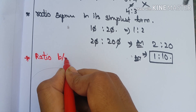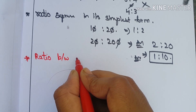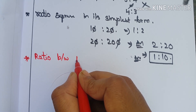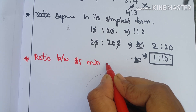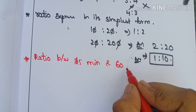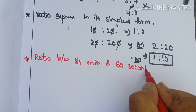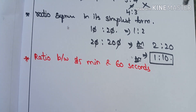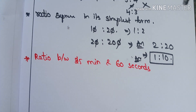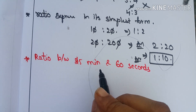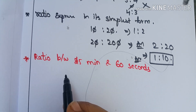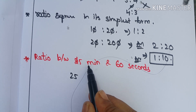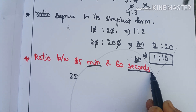Next example: find the ratio between 25 minutes and 60 seconds.